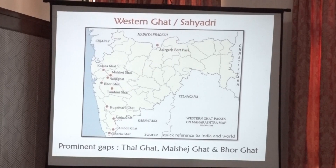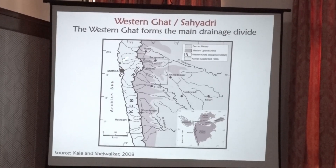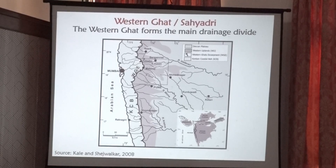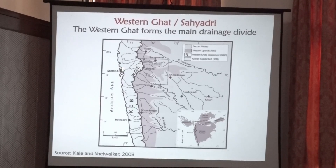There are several Ghats that most of you must have traveled along. One is near Kasara, called Thalghat; one is between Pune and Mumbai called Borghatt, and there are many others. The Western Ghats is a water divide between west-flowing and east-flowing rivers. For example, the Godavari River's source is only a few kilometers from here, yet it travels about 1250 kilometers to meet the Bay of Bengal, while its source is only about 100 meters from the western coast.